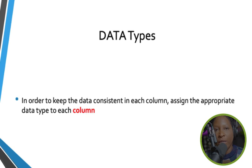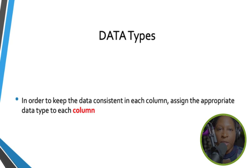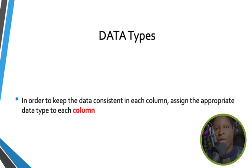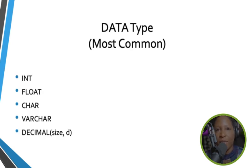When building tables, consider the data type expected for each column. For example, a name column will need a varchar or string data type, age will be an int, and price will be a decimal. Assign the appropriate data type to each column to keep data consistent. Common data types include int, float, char, varchar, and decimal.